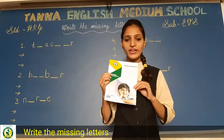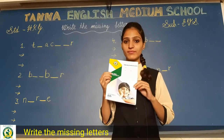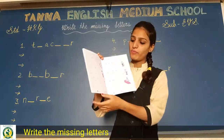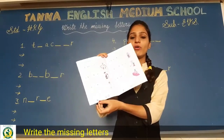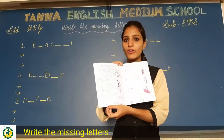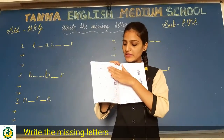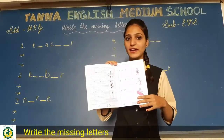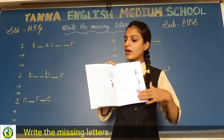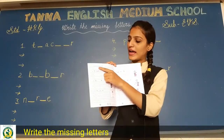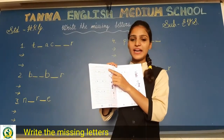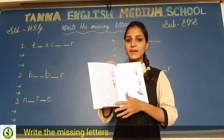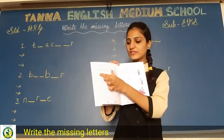So take out your EVSCW. Open page number 24. आज हमने page number 24 and 25 दोनों complete करना है। और इसमें क्या करना है? Write the missing letters — missing letters को लिखना है, इस word को complete करना है।